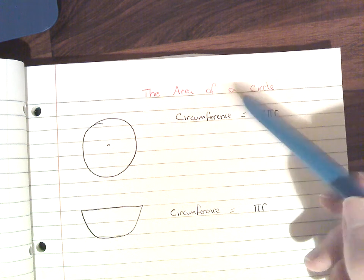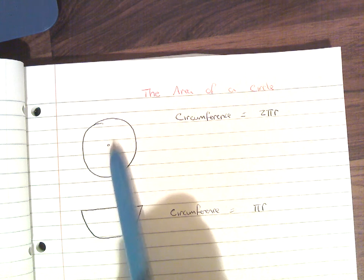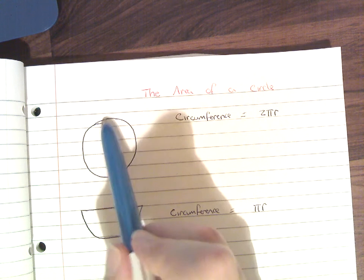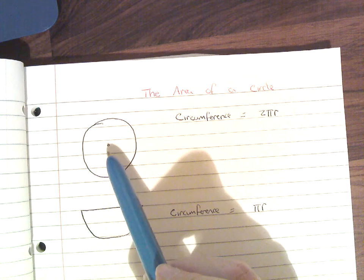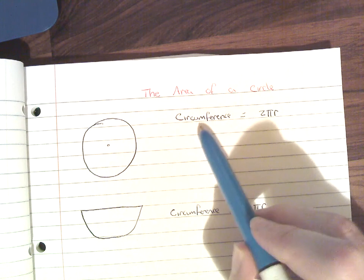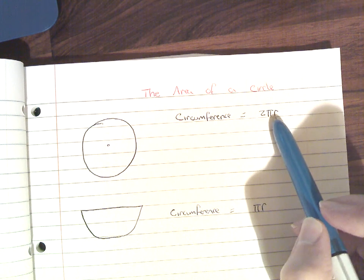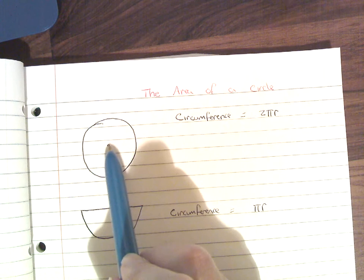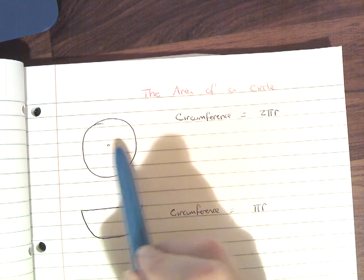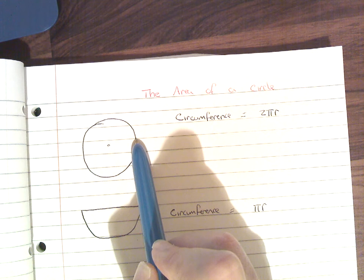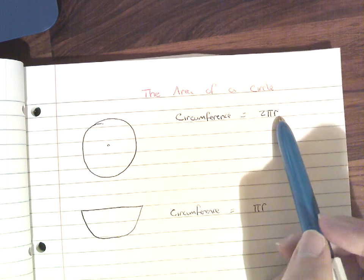In this lesson we're going to look at the area of a circle. This here is a circle, and the outside perimeter, if we were to measure around it, is what's known as the circumference. We've learned that the circumference has a formula: it's 2 multiplied by pi multiplied by r, which is the radius. The radius is the distance from the centre point out to the boundary.